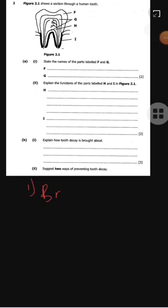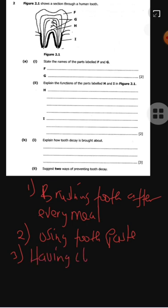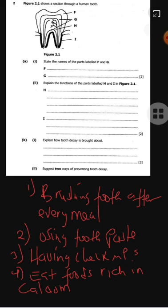State two ways of preventing tooth decay. One, we can say brushing teeth after every meal. Two, using toothpaste. Three, having regular check-ups. And four, eat foods rich in calcium.